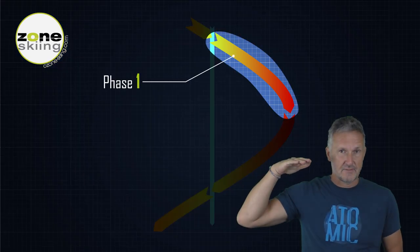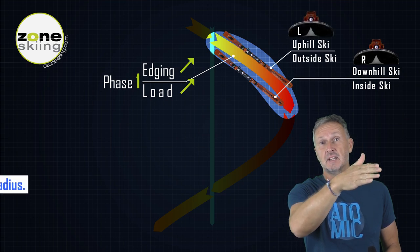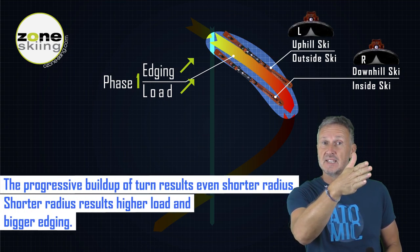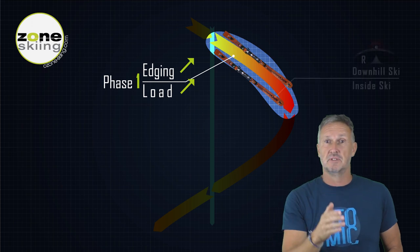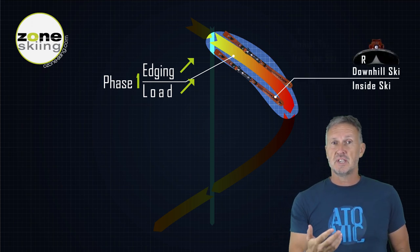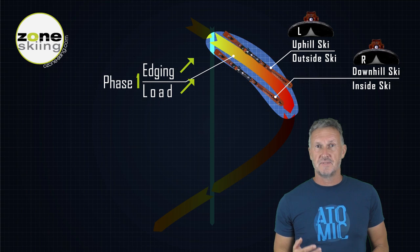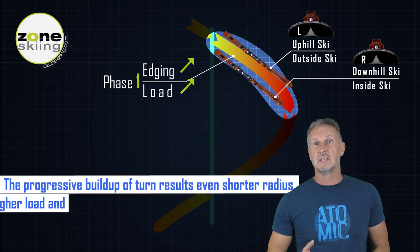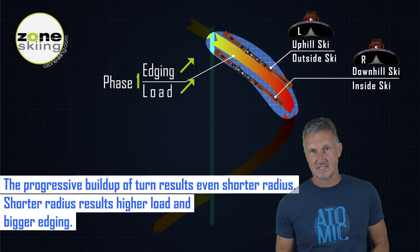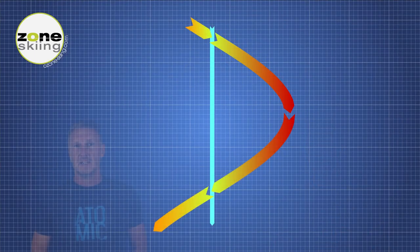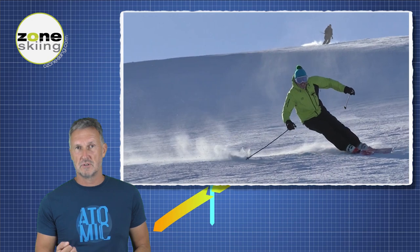In the first phase, the skier goes to the side. The skis get an edge, preventing the side directional movement of the skier and pushing him back to the center. The edging and the load are increasing. In this phase, the uphill ski is the outside ski and the inside ski is the downhill ski. The first phase of the turn is very important for control.